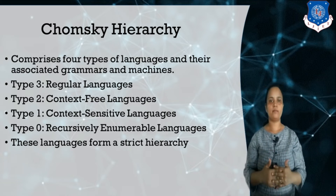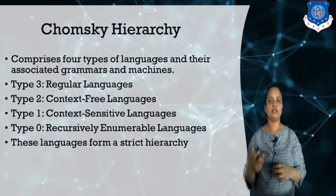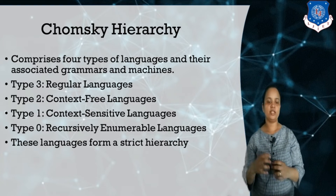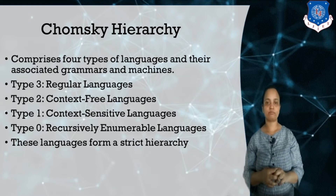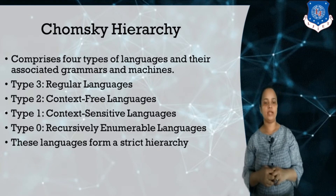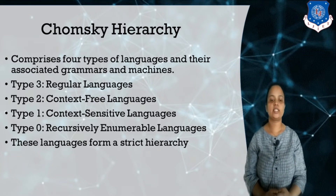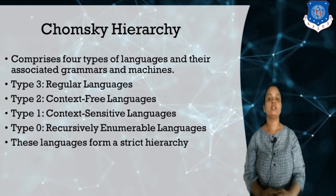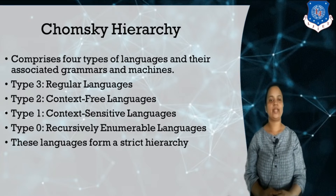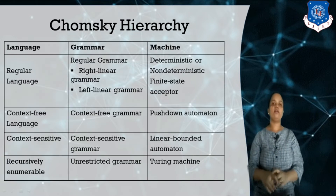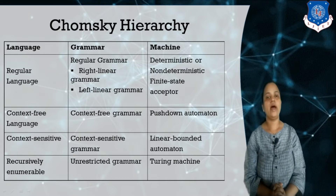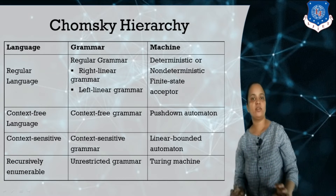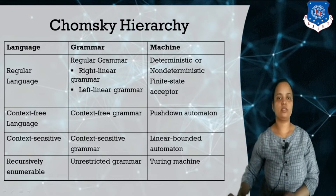What is Type 0 grammar and what kind of language does this grammar generate? Type 0 grammar generates recursive enumerable languages. Type 1 generates context sensitive languages, Type 2 generates context free languages, and Type 3 generates regular languages. Based on these four types of grammars, we also define what kind of machine accepts the respective languages.